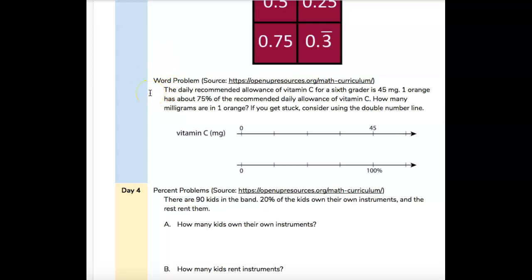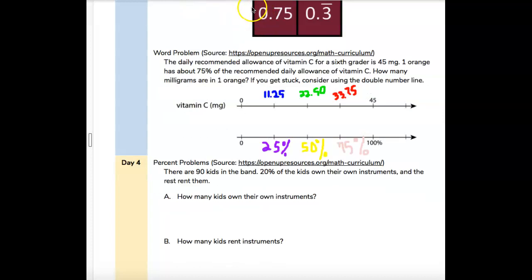It says, the daily recommended allowance of vitamin C for a sixth grader is 45 milligrams. One orange has about 75% of the recommended daily allowance of vitamin C. How many milligrams are in one orange? If you get stuck, consider using the double number line. All right, let me explain to you how we do this.